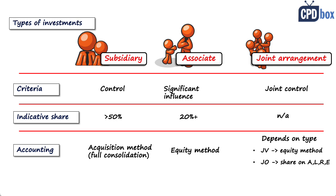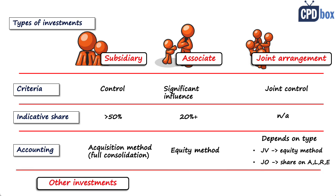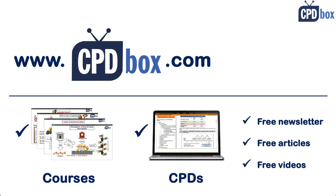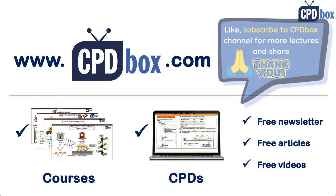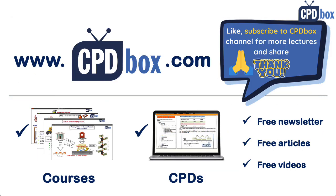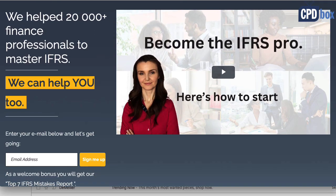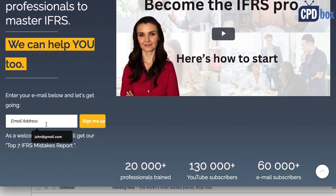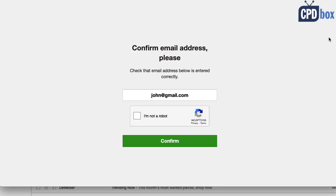There are also other investments that don't fall into any of the above categories — these are simply financial instruments accounted for in line with IFRS 9. So this was the short intro to group accounts. Thank you for watching. Please like this video if it helps, hit the subscribe button and notification bell to stay tuned for more, and if you need to learn IFRS more deeply and fast, check out my free newsletter on cpdbox.com.